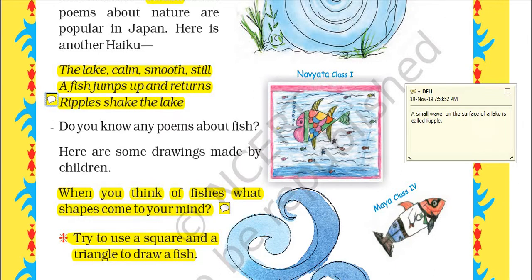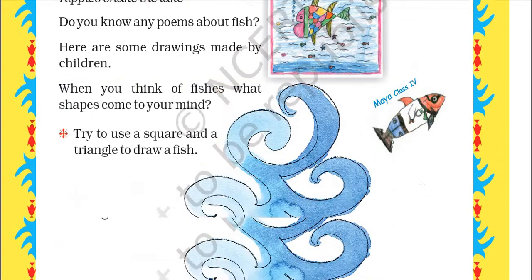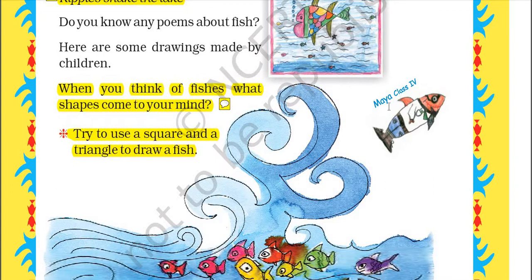Here are some drawings made by children. See these beautiful pictures. This picture is drawn by Navyata of class 1. Then see another picture drawn by Maya of class 4 — lovely creation, lovely creativity. See, this fish is wearing pants and shoes, looking very nice and beautiful.